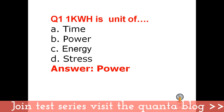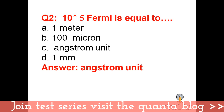Question number one: kWh (kilowatt hour) is the unit of power. 10 to the power 5 fermi is equal to angstrom unit. Fermi is 10 to the power minus 15 meter and angstrom is 10 to the power minus 10 meter, so 10 to the power 5 fermi equals 10 to the power minus 10 meter, that is angstrom unit.